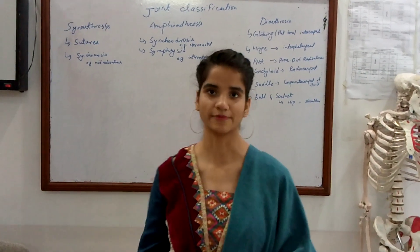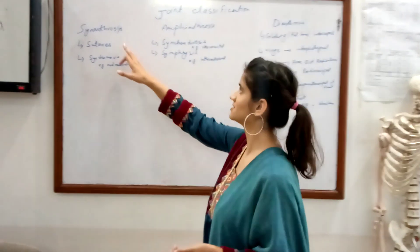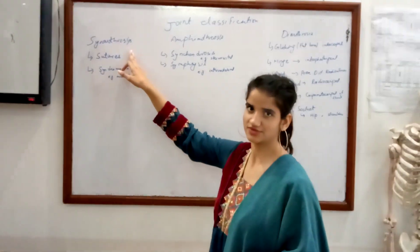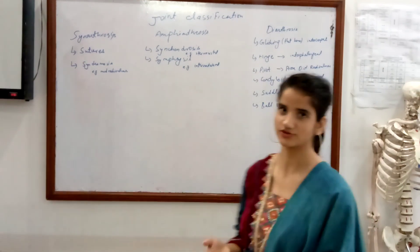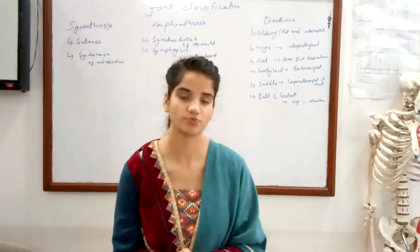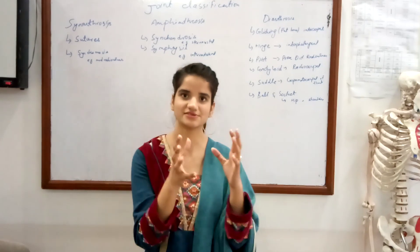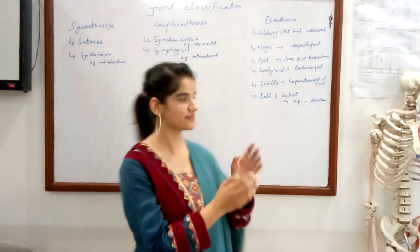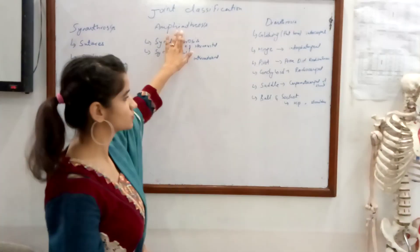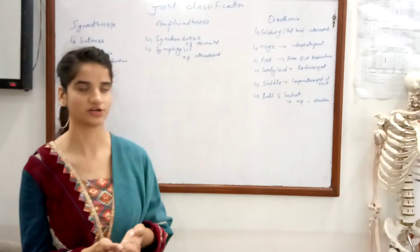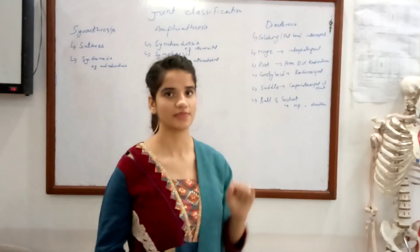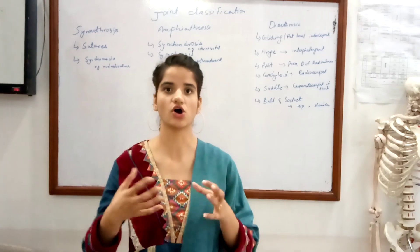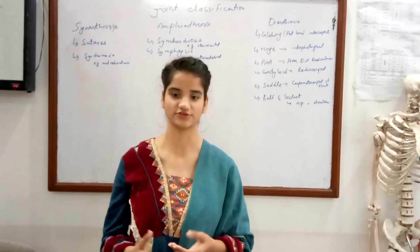There are basically three types of joints. One is synarthrosis, the second one is amphiarthrosis, and the third one is diarthrosis. Synarthrosis are essentially immovable joints, amphiarthrosis are slightly movable joints, and diarthrosis are freely movable joints. All these categories have their own subclassification.